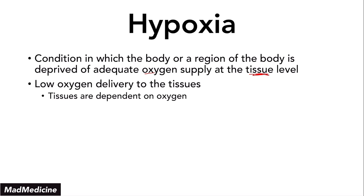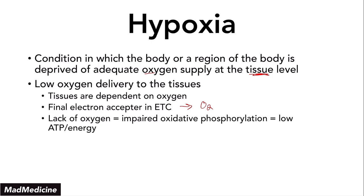If you think back to biochemistry, you'll remember that the final electron acceptor in the electron transport chain is actually oxygen. If you have low oxygen, you're not going to be able to go through proper oxidative phosphorylation, and that's going to lead to low ATP. So low oxygen means low energy or low ATP, which can lead to cell injury and or death.